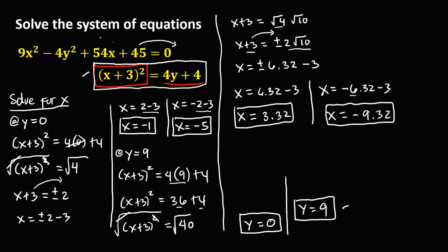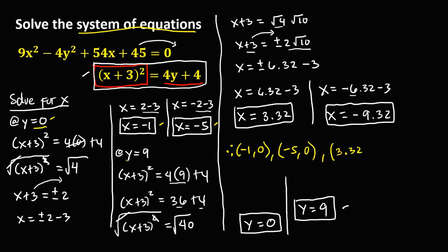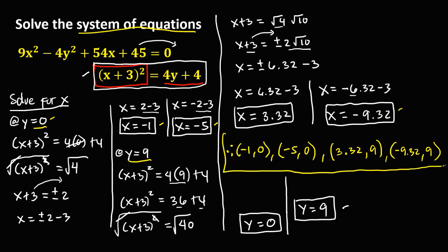Therefore, the solutions of this system of nonlinear equations are: x equals negative 1, y equals 0; x equals negative 5, y equals 0; x equals positive 3.32, y equals 9; and x equals negative 9.32, y equals 9. These are the four solutions.